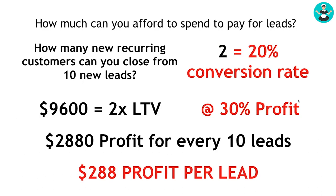The next big question is: how much can you afford to spend to acquire leads? If you know this process, you can figure out how to get leads at a cost that keeps you profitable. You need to know your conversion rate. Think about it this way: how many new recurring customers can you close from 10 new leads? Let's say for every 10 leads, you talk to six people, you get to clean for four of them, two of those turn into monthly recurring customers. That means your conversion rate to your ideal customer is 20% out of every 10 new leads.